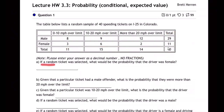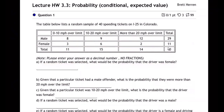I think you got it, let's dive in. If a random ticket was selected, what would be the probability that the driver was female? So remember how we do probability — this is the probability chapter, which is always a challenging chapter. Probability is always the number being asked for over the total number.